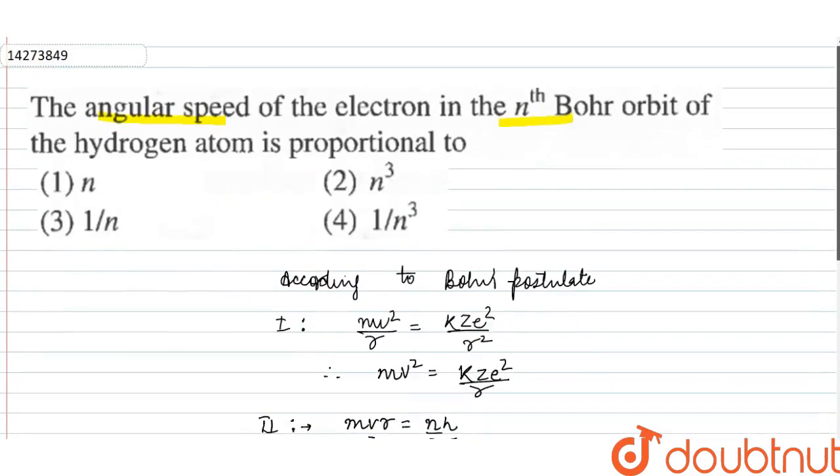Looking at our options, it is proportional to 1/n³. So option 4 matches and is correct.